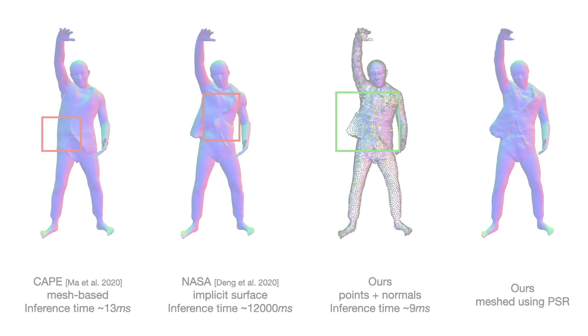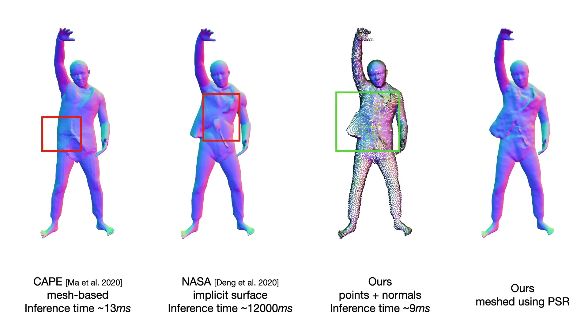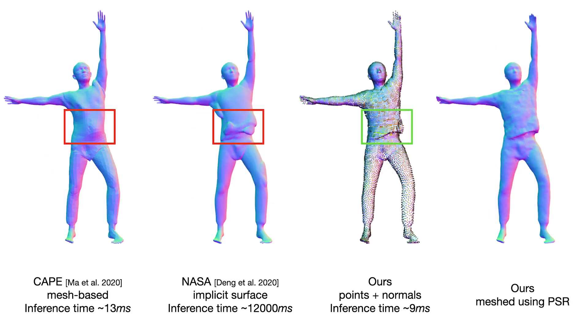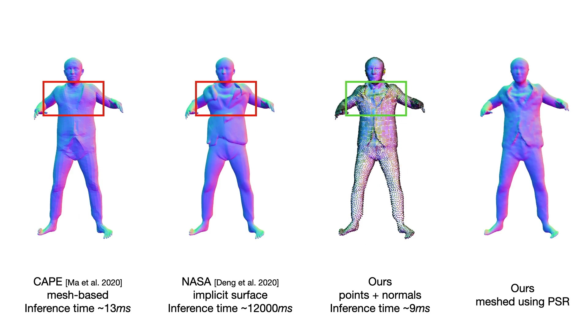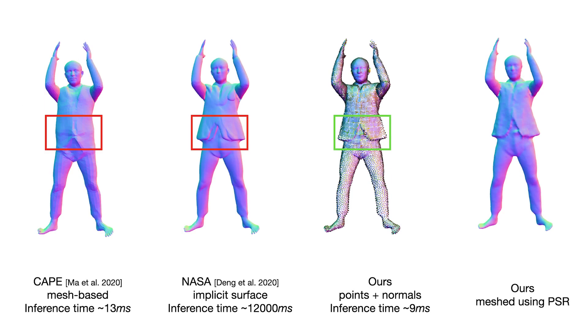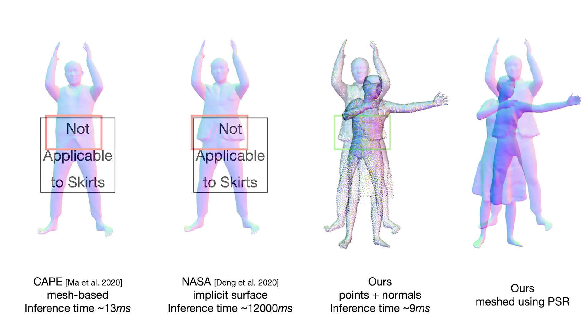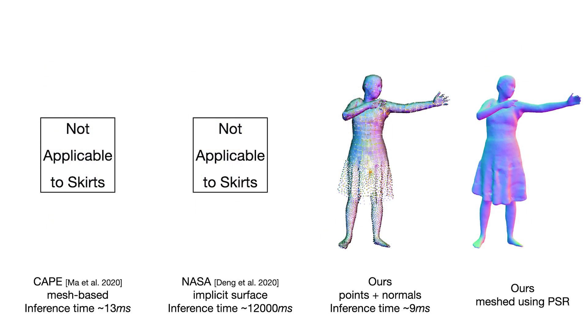We compare our method with state-of-the-art clothed human modeling methods. CAPE learns parametric mesh models from registered templates and has difficulty modeling topological change. NASA uses an implicit surface representation and supports various topologies, but it often suffers from ghosting artifacts, requires watertight meshes for occupancy training, and takes cubic time in space to evaluate occupancy values. SCALE, on the other hand, learns the model from point clouds and supports fine-grained clothing deformations with topological changes.